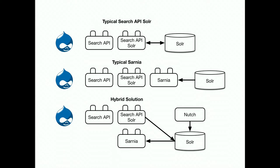What we were trying to accomplish doesn't necessarily map exactly to the intended use for either Search API Solr or Sarnia. Typically Search API Solr provides a clean two-way communication — push content to Solr, run queries, display results. Sarnia is more of a one-way read from Solr. So we built a hybrid solution: using Search API Solr to push Drupal content to Solr, having Nutch crawl content and push that into the same Solr index, and then using Sarnia to pull it out in a read-only configuration.